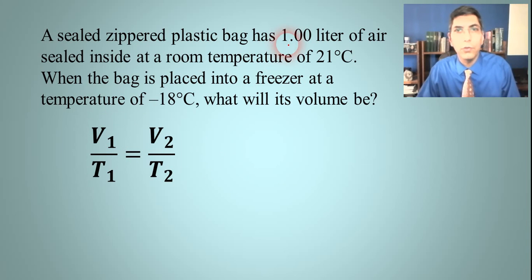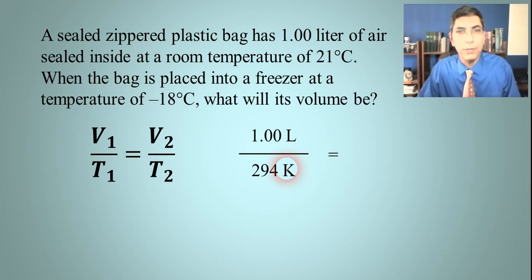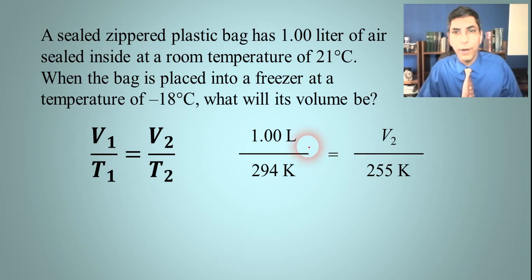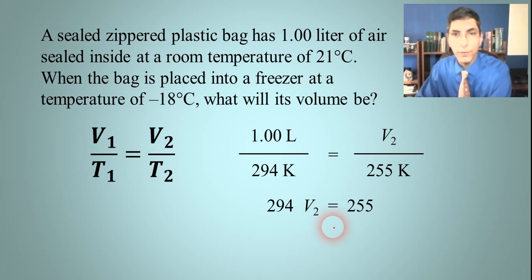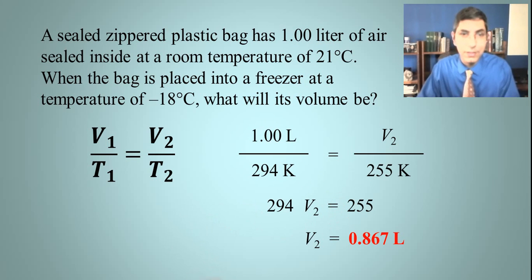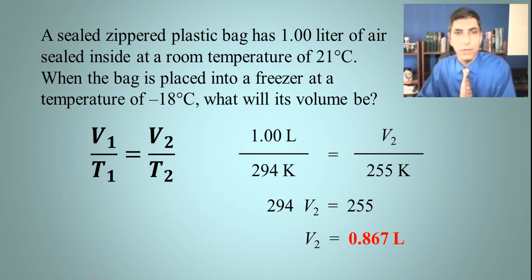Plugging into Charles' law: v1 = 1 liter, t1 = 21°C = 294 K, t2 = -18°C = 255 K, and we solve for v2. Cross-multiplying: 255 = 294 times v2. Dividing both sides by 294, v2 = 0.867 liters. This makes sense — putting a plastic bag or empty water bottle in the freezer causes it to shrink down, just as this calculation shows.